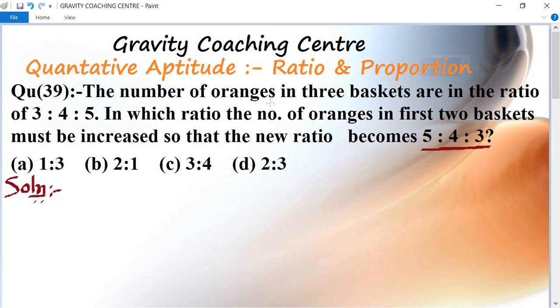What is the question? The number of oranges in three different baskets, the ratio is given. What is the number of oranges in the first and second baskets? How many oranges will increase the new ratio to 5 is to 4 is to 3?